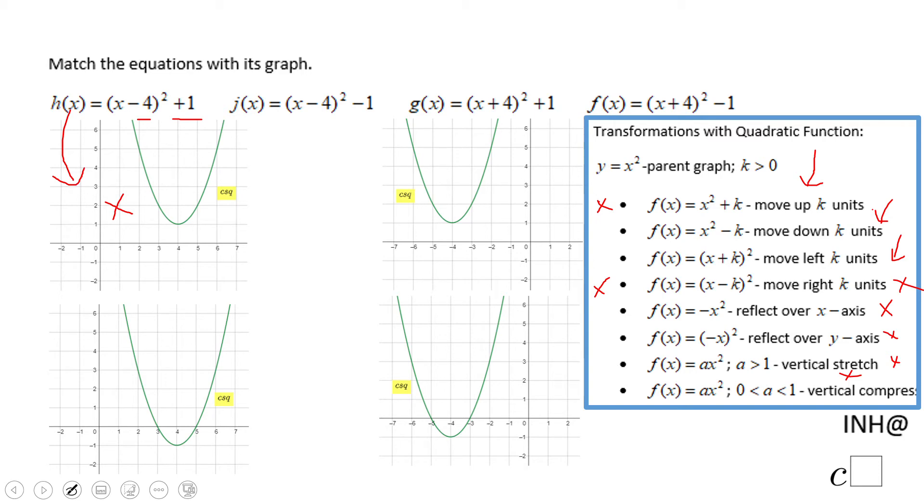Let's take a look at the second one which we have minus 4 here and minus 1 here. That tells us that it moves 4 right and 1 down. Which of these three graphs is the one that moves 4 right and 1 down? That is this one.